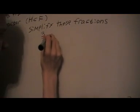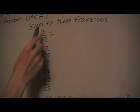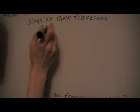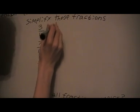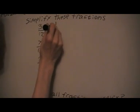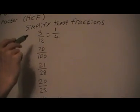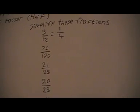So now we're going to simplify some fractions. To simplify this, the highest common factor of these two numbers is 3, so I'm going to divide them both by 3. The top one will be 1 when I divide it, and the bottom one will be 4. All I've done is divide both numbers by 3, because 3 is the highest common factor.